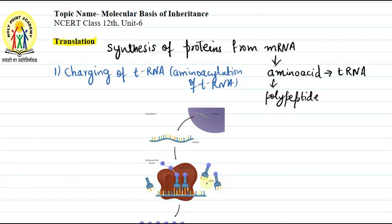These are the tRNA molecules. Each tRNA molecule, according to its bases, links with the corresponding amino acid. Amino acids are activated in the presence of ATP and linked to the corresponding tRNA. The role of tRNA (transfer RNA) is to bring the amino acids for the synthesis of the polypeptide chain.